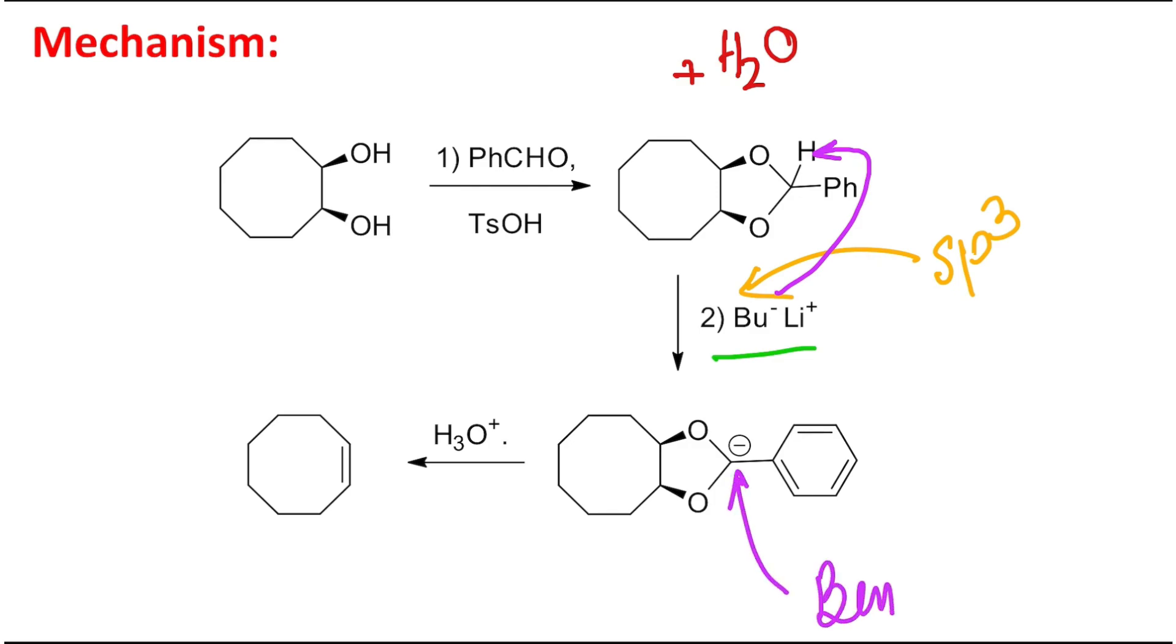This sp³ carbanion abstracts the proton from the benzylic position and produces this carbanion. More specifically, it's a benzylic carbanion. We know this benzylic carbanion is resonance stabilized by conjugation with the phenyl group. Not only this, it is also stabilized by the -I effect of these two oxygen atoms, because oxygen is electronegative.